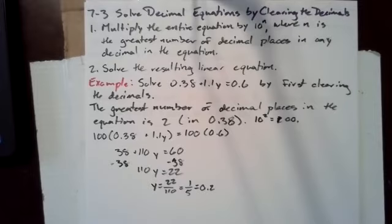The book suggests something different. The book suggests that instead of multiplying the entire equation by 10 to the n, you change the decimals to fractions and use the greatest common denominator. Sorry, the least common denominator.